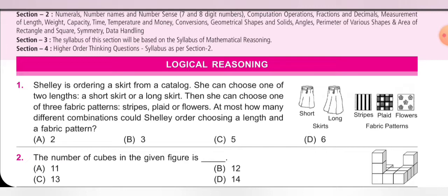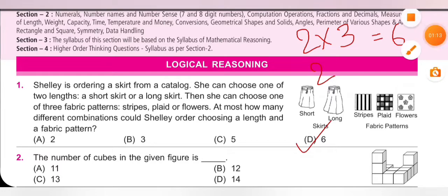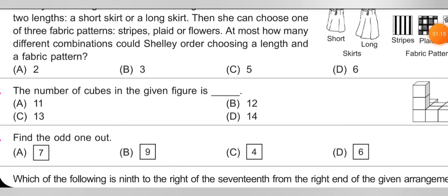Question 1: Sally is ordering a skirt from a catalog. She can choose one of two lengths — a short skirt or long skirt — so she has two options for the length. Then she can choose one of three fabric patterns: strips, plaid, or flower. At most how many different combinations could Sally order? Options for length: two. Options for fabric: three. Total combinations = 2 × 3 = 6. Option D is correct.